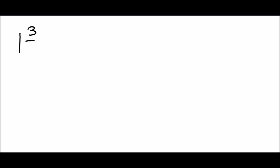Today we're going to be adding mixed numbers with regrouping. Our first example: we'll take the mixed number one and three-fifths and add six and four-fifths. Step one is adding the fractions: three-fifths plus four-fifths is seven-fifths. Step two, we add the whole numbers: one plus six is seven.